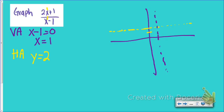Now let's find our intercepts. For the x-intercept, that's when the top of my fraction equals 0 — so I need 2x plus 1 equal to 0, which gives x equals negative 1 half. So I'll cross the x-axis at negative 1 half. For the y-intercept, I plug in 0 everywhere there's an x: that gives 0 plus 1 over 0 minus 1, which is 1 over negative 1, so the y-intercept is negative 1. I'll plot the point (0, negative 1).